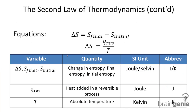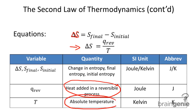Two important equations. The first equation is delta S — the change in entropy — which is equal to the final entropy minus the initial entropy. The second formula is also the change in entropy, and that is Q, the heat added in a reversible process, divided by the absolute temperature of the system. These are two ways to calculate the change in entropy, or how much disorder has been gained.